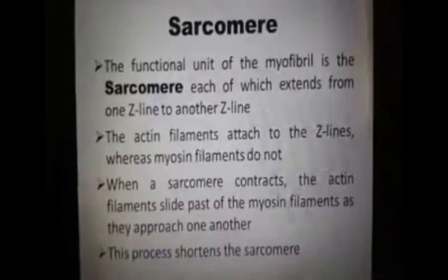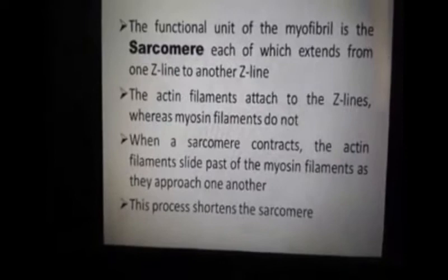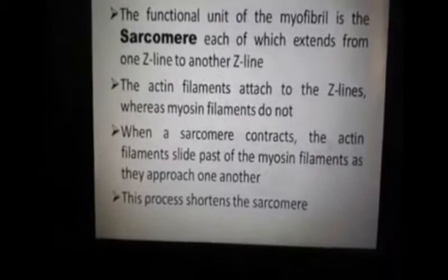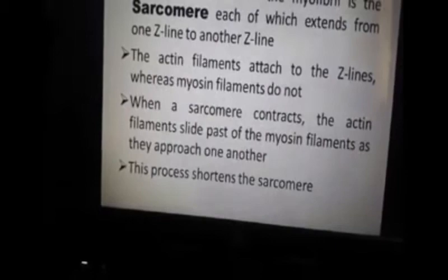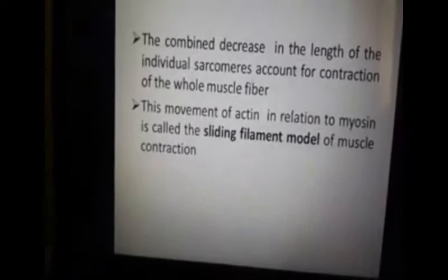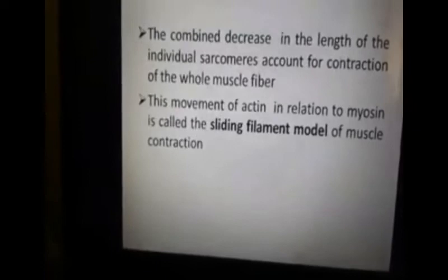The functional unit of the myofibril is the sarcomere, each of which extends from one Z line to another Z line. The actin filaments attach to the Z lines, whereas myosin filaments do not. When a sarcomere contracts, the thin actin filaments slide past the myosin filaments as they approach one another. This process shortens the sarcomere. The combined decrease in the length of individual sarcomeres accounts for contraction of the whole muscle fiber.